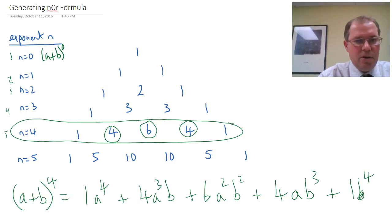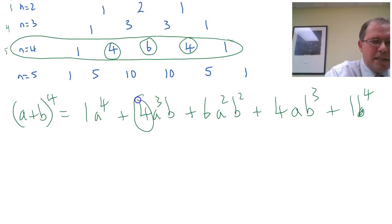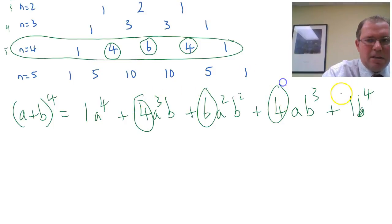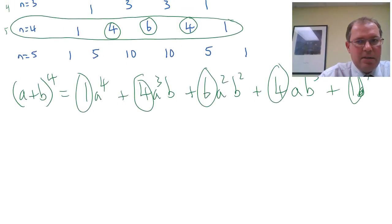Now, is there another way, because obviously if I had to do a plus b to the power of 10, it would get very tedious, because I'd have to find the 11th row of Pascal's triangle. So is there a way to find these numbers without having to write Pascal's triangle out? And the answer, of course, is yes. And a nice way to explain it is actually from probability.